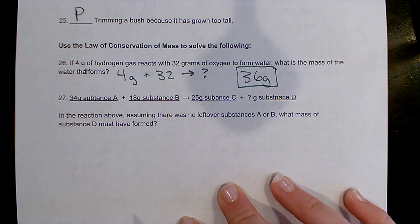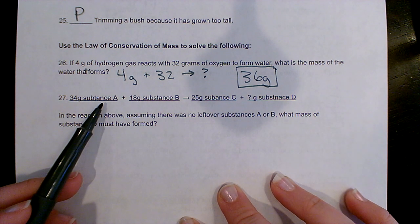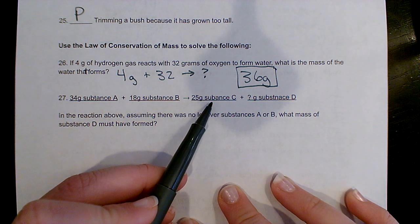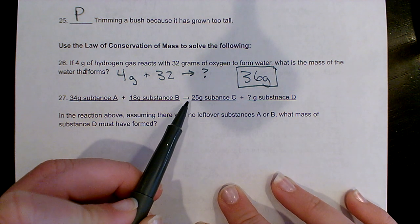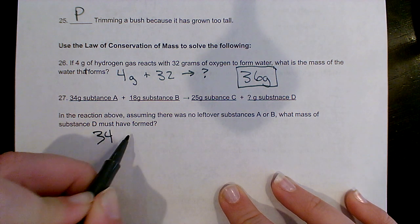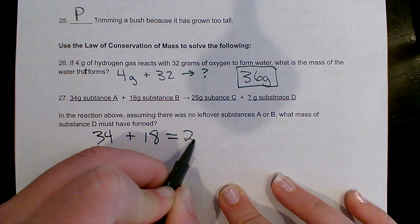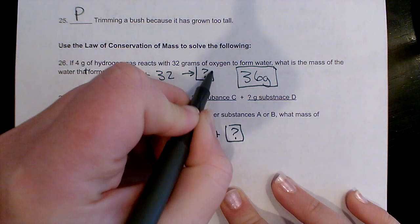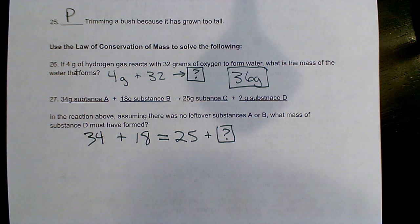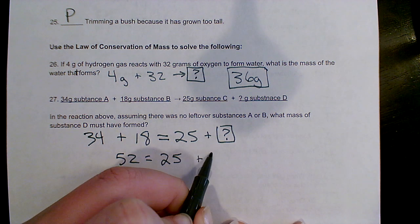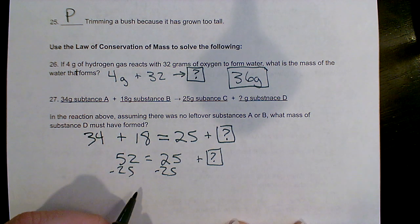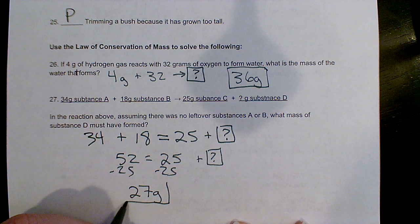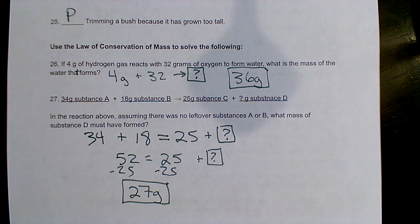This one's a little bit tougher. I have 34 grams of something reacting with 18 grams of something else, and we're going to make 25 grams of something, and this one has two products. Mathematically, we can just take that arrow and turn it into an equal sign: 34 plus 18 equals 25 plus unknown. So first I take 34 plus 18, that's 52. Then my unknown is 52 minus 25, and I get 27 grams — that's how many grams of substance D I would have to have.